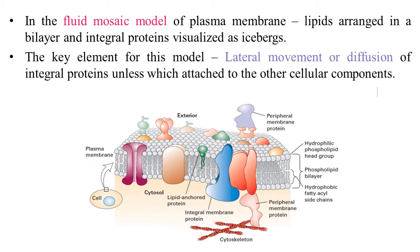In the fluid mosaic model, the lipids are arranged in a bilayer. Some proteins inserted and spanning the phospholipid bilayer are called membrane-spanning proteins, or integral membrane proteins. If you see this picture, the orange and blue integral membrane proteins are present. The orange integral protein is attached to a peripheral membrane protein, which in turn attaches to the cytoskeleton.